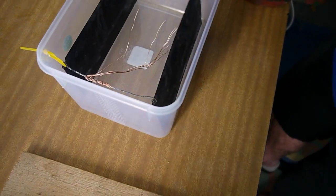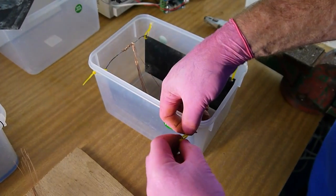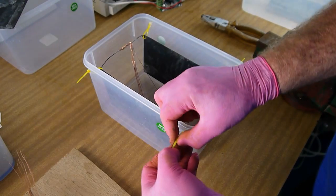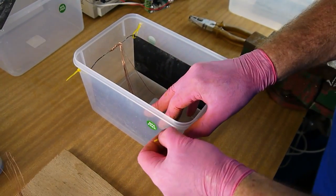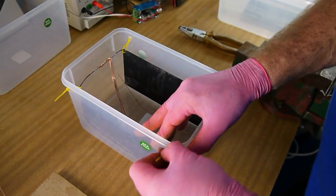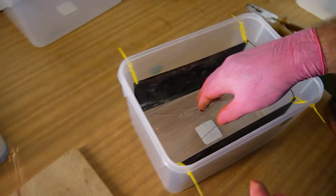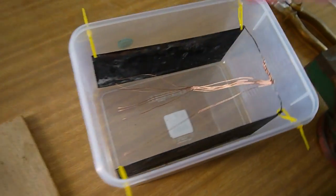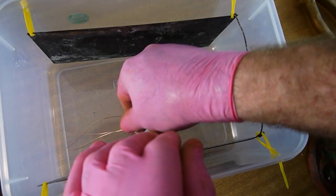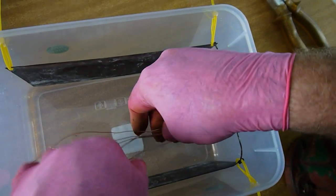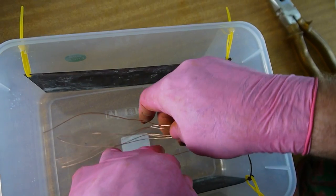Alright, so do the same on this side. Final step that we do after this is put in the salty water. So once again you've just got to try and make sure these copper wires don't touch the nano-coated part. Keep them separate.